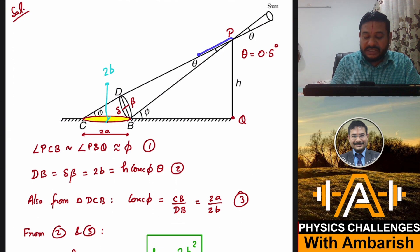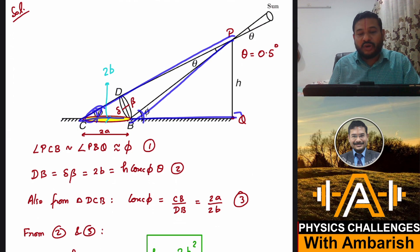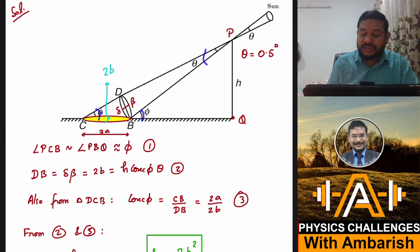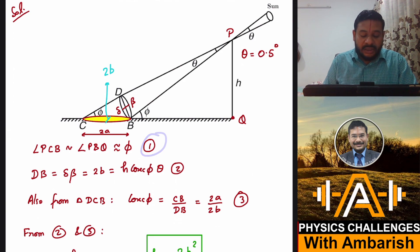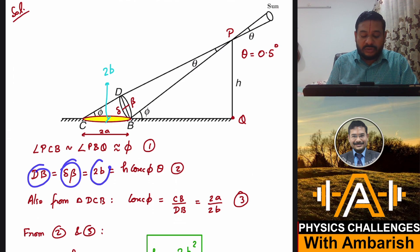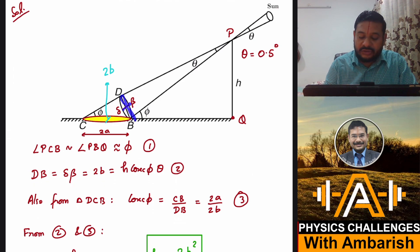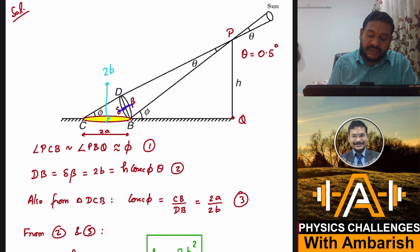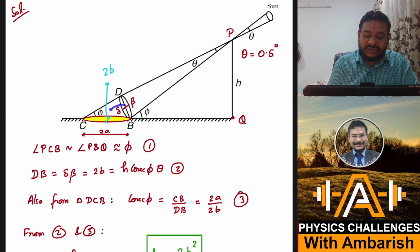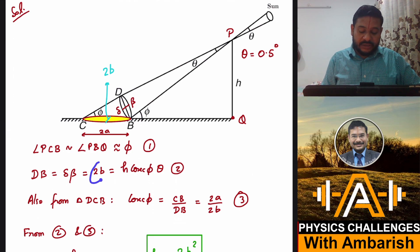Angle PCB — call it angle phi. Both PCB and PBQ are approximately phi, because theta is only 0.5 degree, which is very small, so we can say both angles are approximately phi. That is equation number one. Additionally, dB equals delta-beta equals 2B. Delta-beta and dB are both local diameters of the cone. This spacing is very small, so the turquoise line is also 2B.